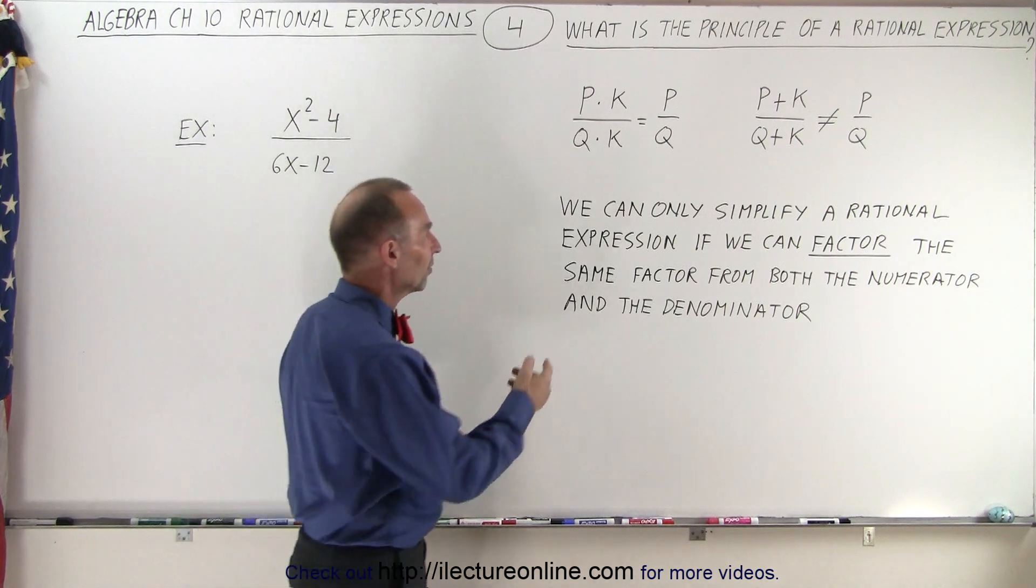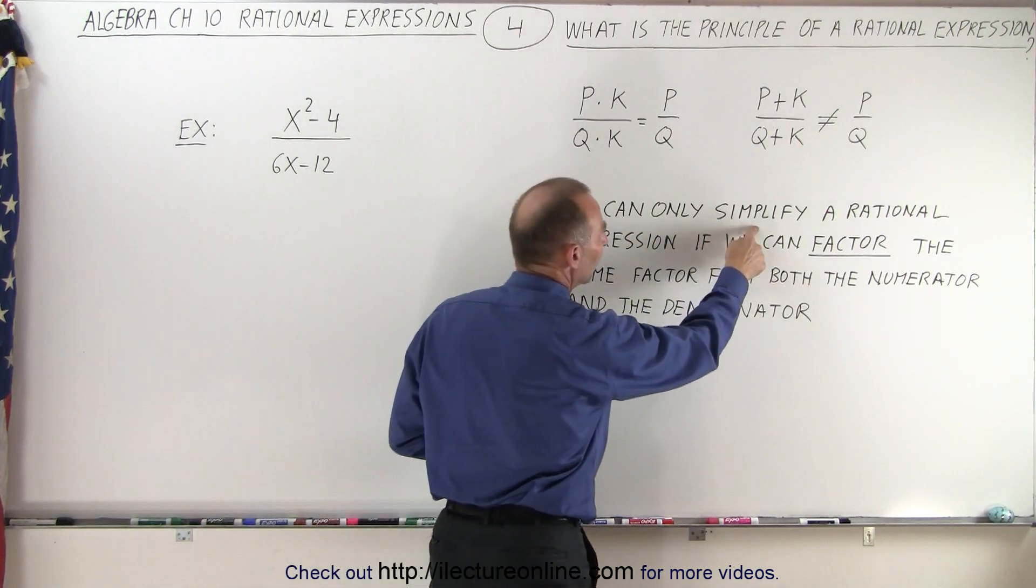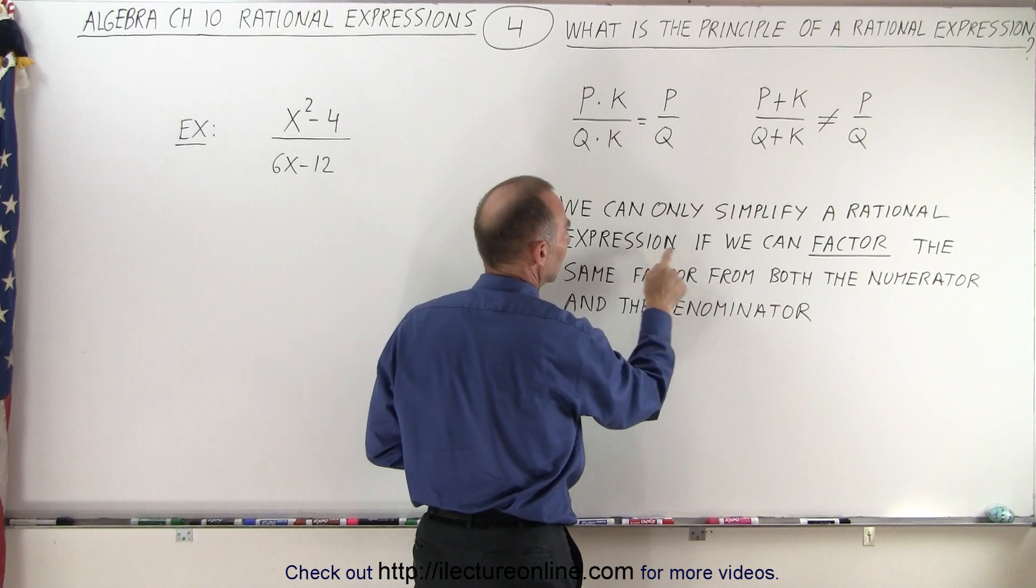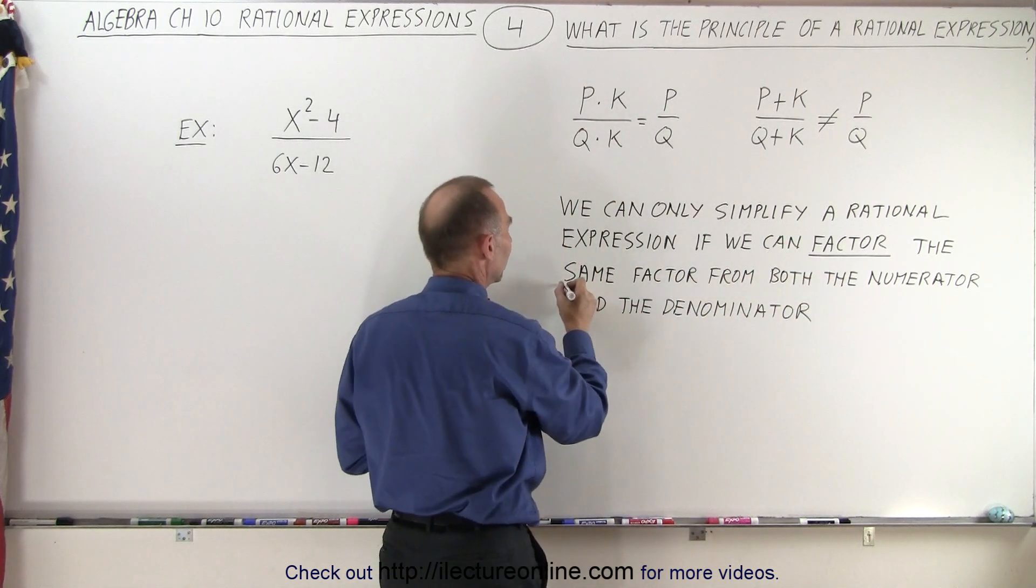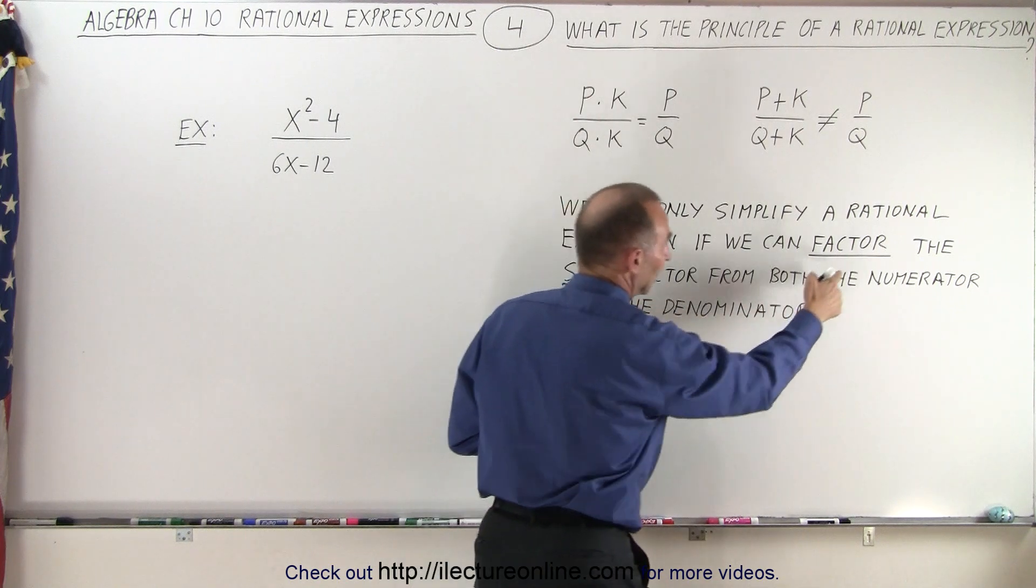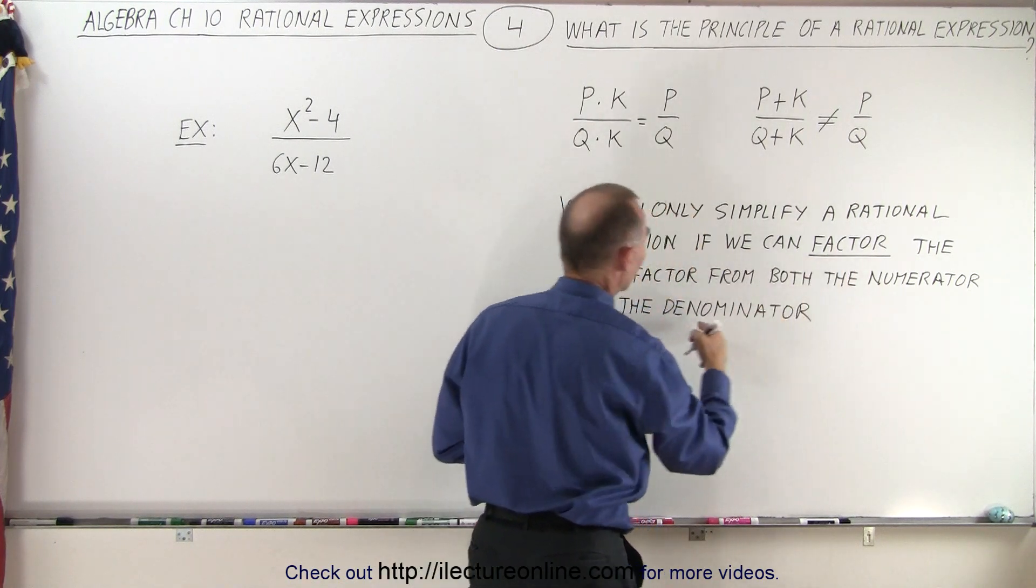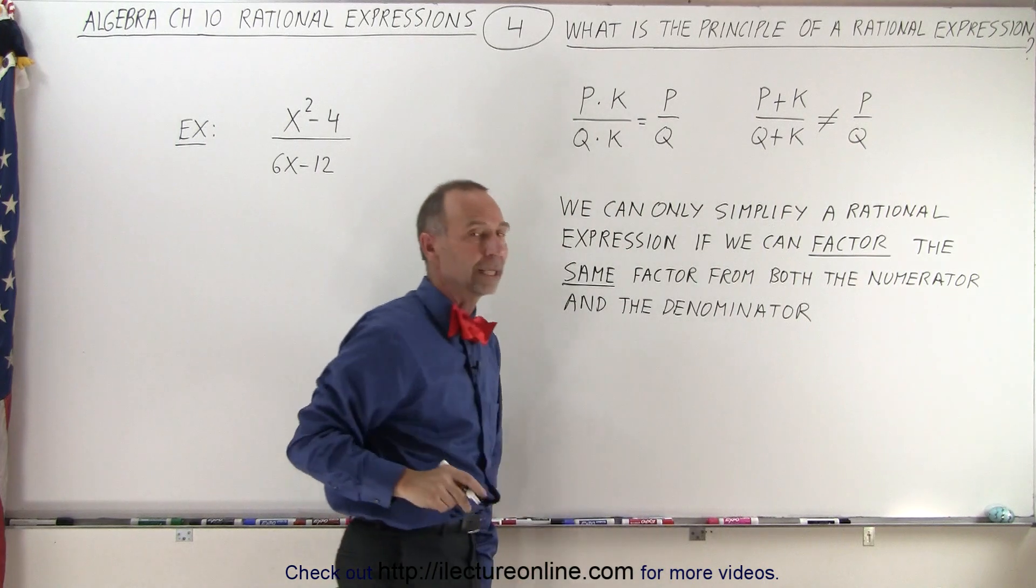So we can only simplify a rational expression if we can factor the same factor, and the key is the same factor, from both the numerator and the denominator.